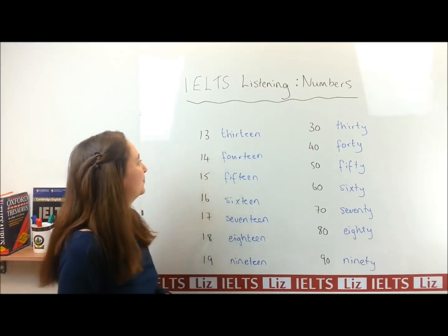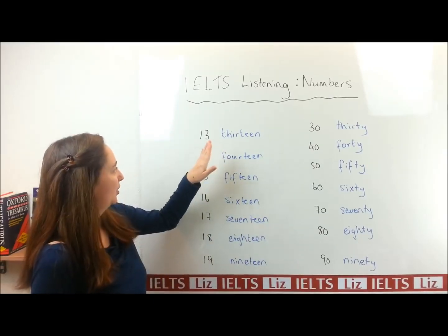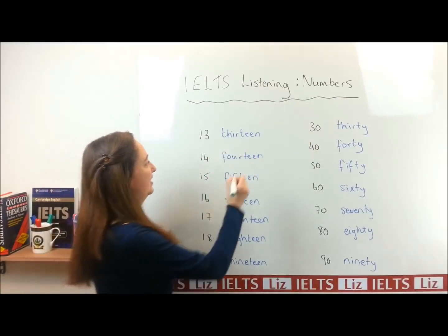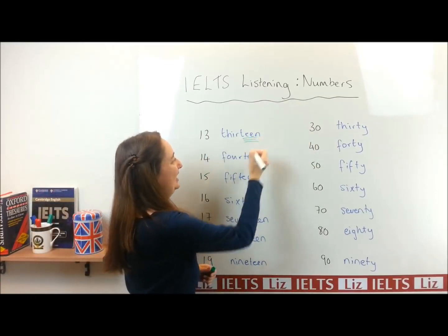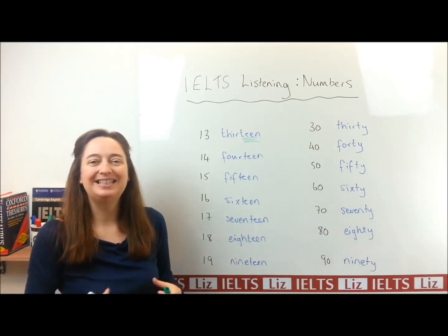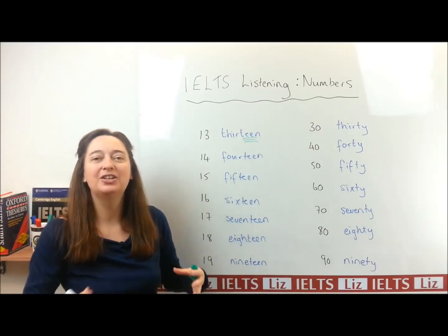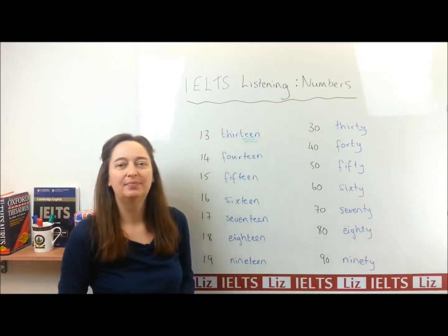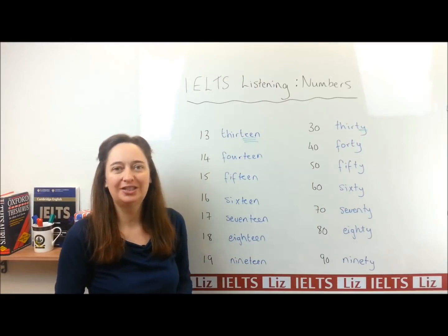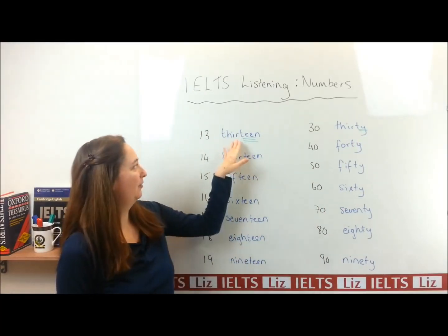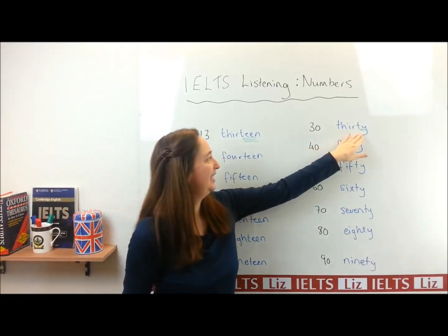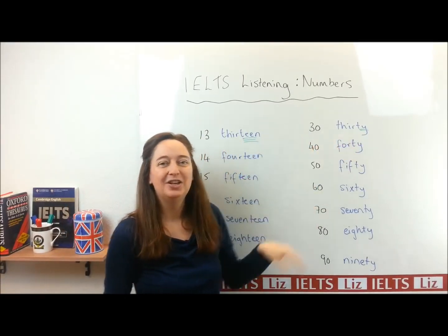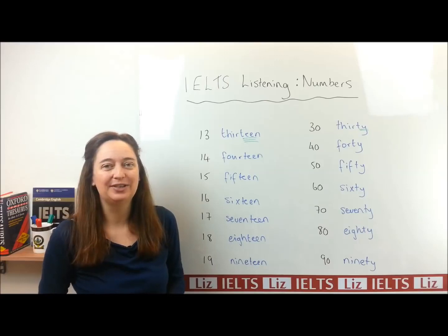Now, let's have a look. As you can see, we've got the teens and the tys. Now, the difference is that this sound here is longer — thirteen — much longer. And this one over here is shorter: ty, thirty. So we have teen, ty: thirteen, thirty. So you can see there is a difference.